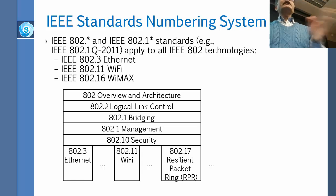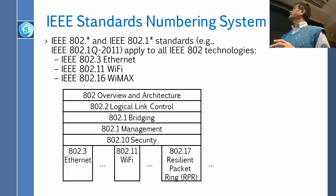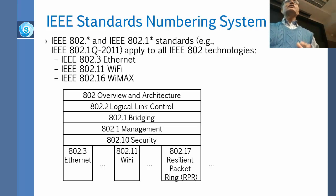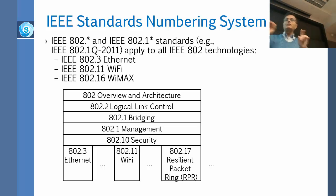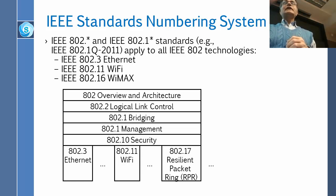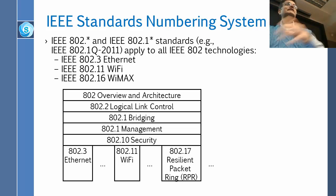Regardless of what 802 number you have, all these 802 standards follow common standards. They all have the same security mechanism — 802.10 — the same management standard — 802.1 — the same bridging, the same logical link control, and so on. So 802 is a group, and any standard starting with 802 must follow all these common things. For example, 802.11 follows 802.1 and 802.2. Standards 3, 4, 5, 6, and 7 are all different from each other.